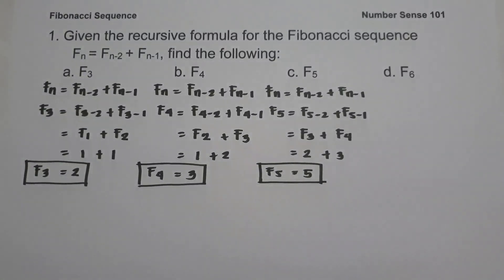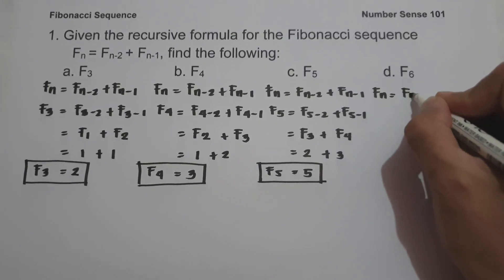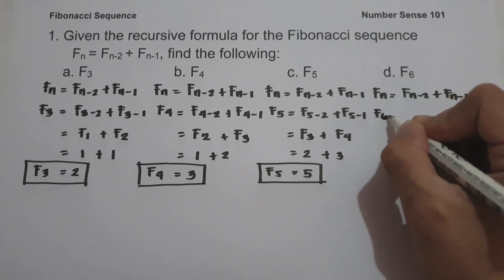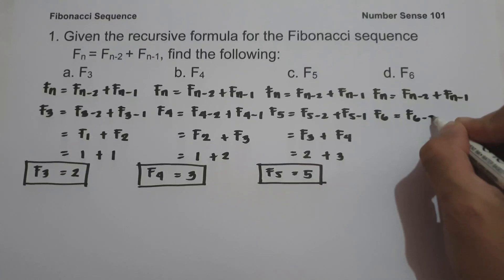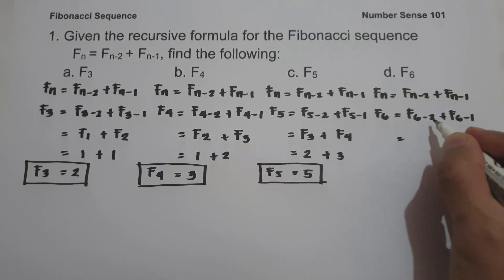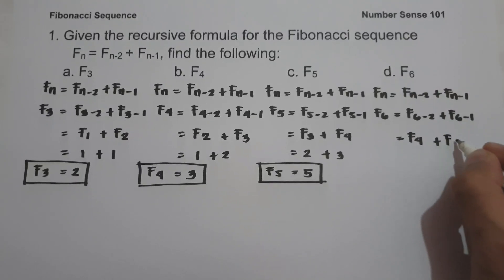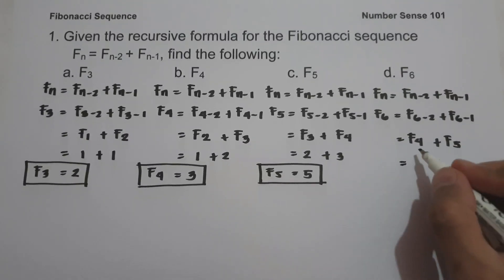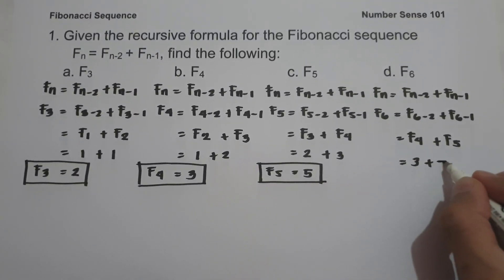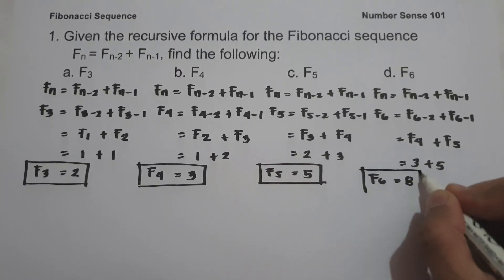On letter D, we have f(6). Writing the recursive formula, f(6) = f(6-2) + f(6-1), which gives us f(4) + f(5). Since f(4) = 3 and f(5) = 5, the value of f(6) is 3 plus 5, which is 8.